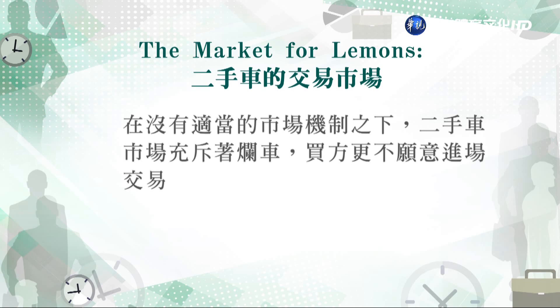因為消費者無法判斷車的品質，所以願意付的價格是好車與壞車的平均值P0（即P1加P2除以2）。如果沒有適當的市場機制，二手車市場就會充斥著爛車。因為高品質二手車的車主想賣P1，但消費者只願意付P0（P0小於P1），所以高品質車主自然不願意把車拿到市場上賣。反過來，低品質車主因為P2大於P0，反而願意進場交易，結果整個市場全是爛車。